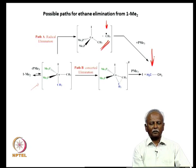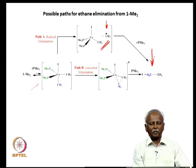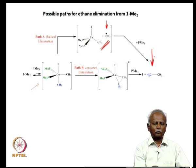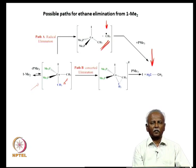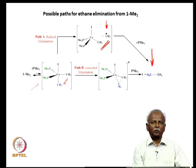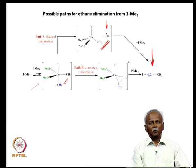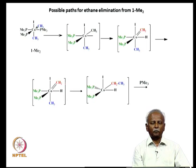Surprisingly, this radical path is not the favored one. It is also possible that you have a concerted elimination after you form the five-coordinate intermediate. That will give you a species where the two methyl groups are cis coordinated. Because the trigonal bipyramidal species is fluxional, you can have rearrangements which will lead to a cis arrangement of the two methyl groups. Concerted elimination can then give you ethane.